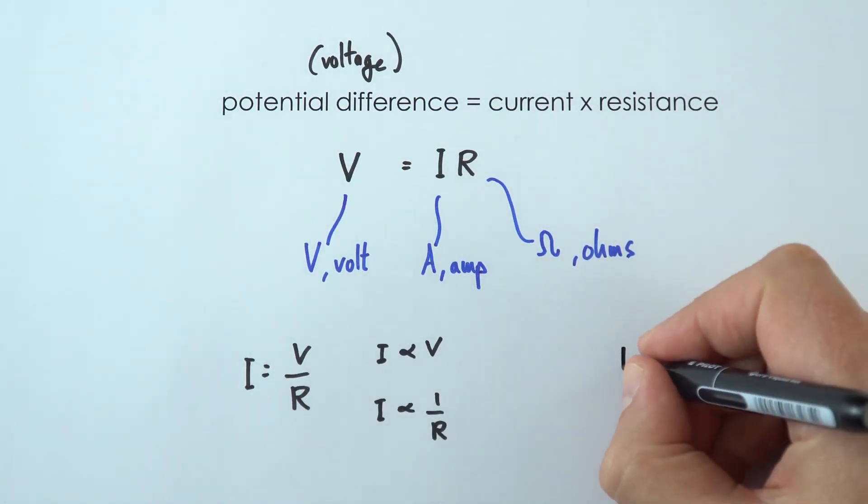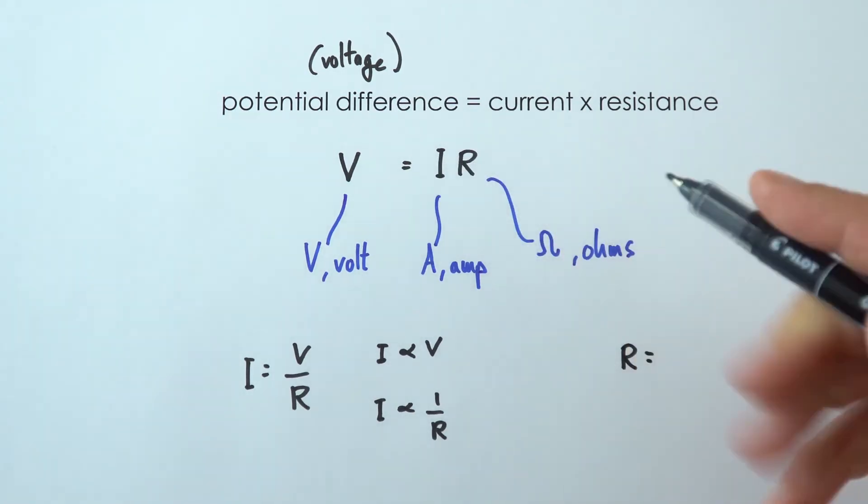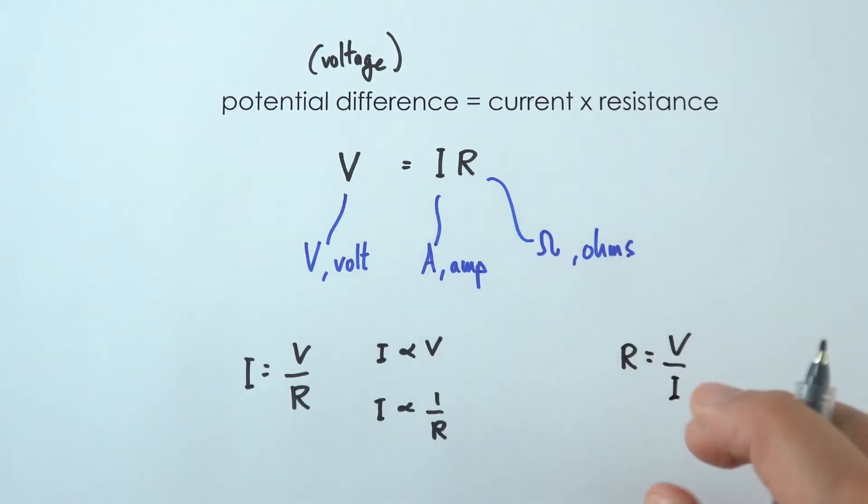The other useful way of thinking about it is I'm going to make R the subject to say that the resistance is equal to V divided by I. And in actual fact, this is what our definition of resistance is. The resistance of a component is really equal to the potential difference across it divided by the current that flows through it.